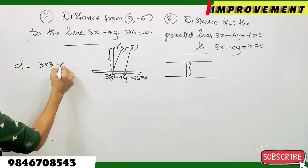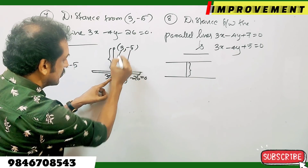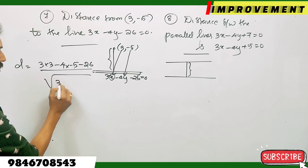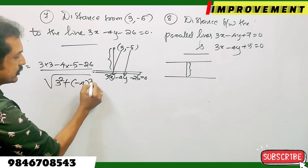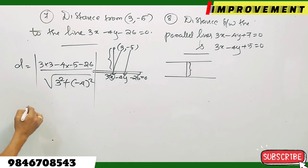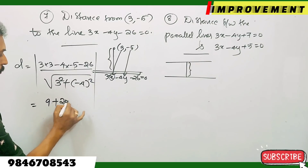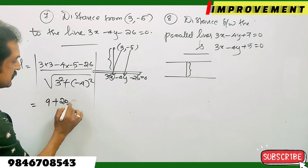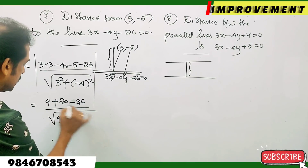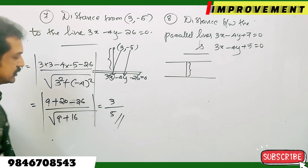Using the distance formula: substitute x-coordinate 3 and y-coordinate minus 5. We get: 3 times 3 minus 4 times minus 5 minus 26, divided by the square root of 3 squared plus minus 4 squared. That is 9 plus 20 minus 26 over root of 9 plus 16, which equals 3 over root 25, giving 3 by 5.